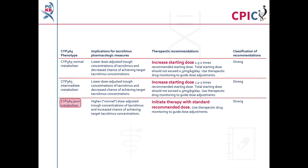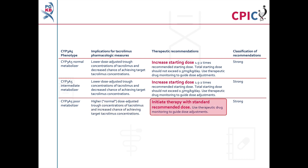Patients with a CYP3A5 poor metabolizer phenotype will have an increased chance of reaching target tacrolimus concentrations with standard dosing. These patients should begin therapy with the recommended starting dose.